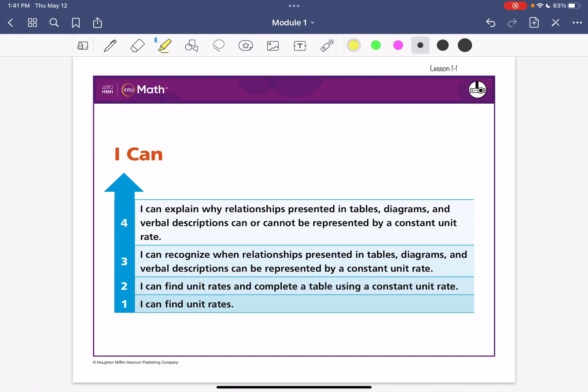Here is Grade 7, Module 1, Lesson 1. Our I can statement for this lesson is that I can explain why relationships presented in tables, diagrams, and verbal descriptions can or cannot be represented by a constant unit rate. So what we are going to work on today is that constant unit rate.